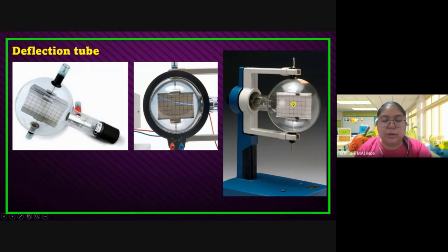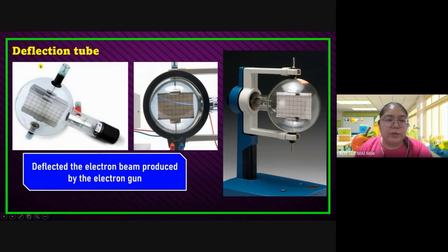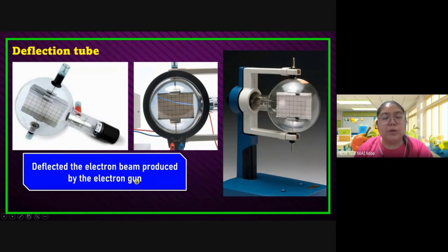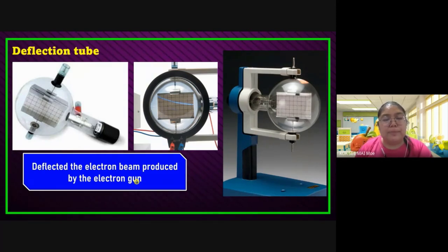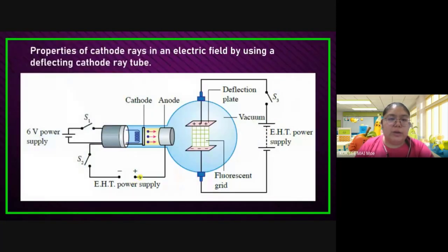This is the diagram for the electron gun when it becomes the deflection tube — inside the tube. The function of the deflection tube is to deflect the electron beam produced by the electron gun. They want to deflect the electron — make sure the electron goes up or comes down — depending on the energy produced. Depending on your charge, the electron will be deflected.